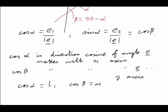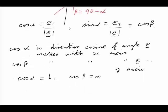And as we've already seen in the triangle, we have expressions for those things. cos alpha is e1 over the length of e, and cos beta, which remember was the same as sin alpha, was e2 over the length of e.